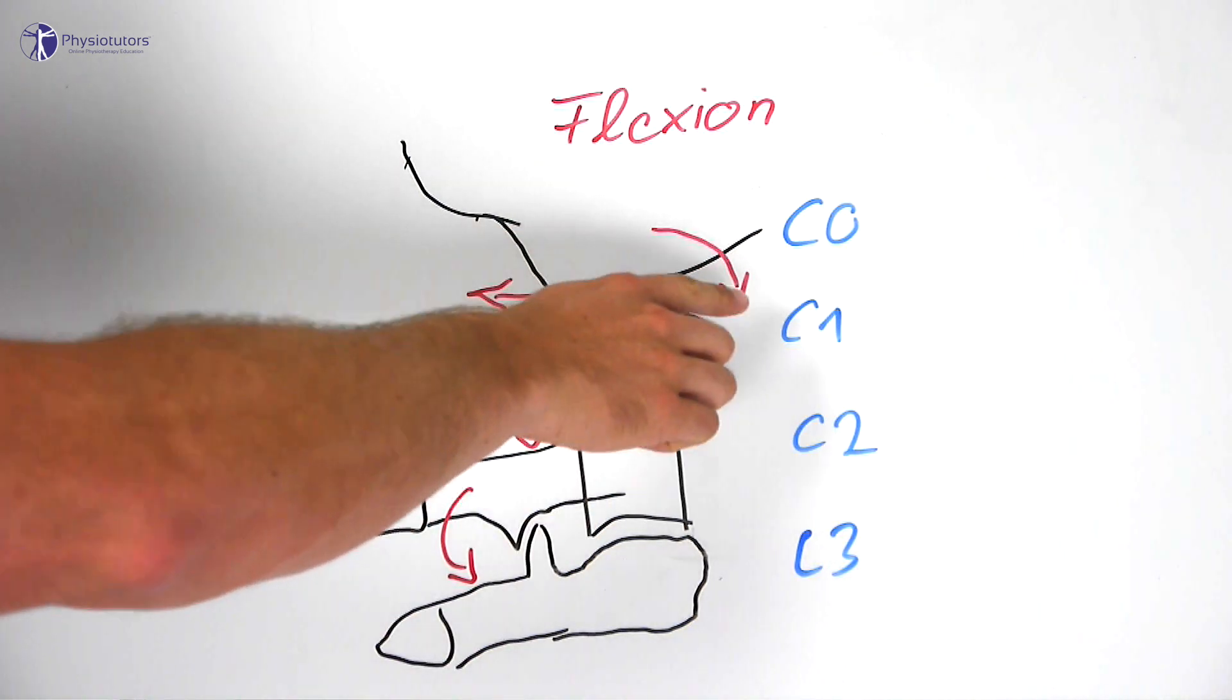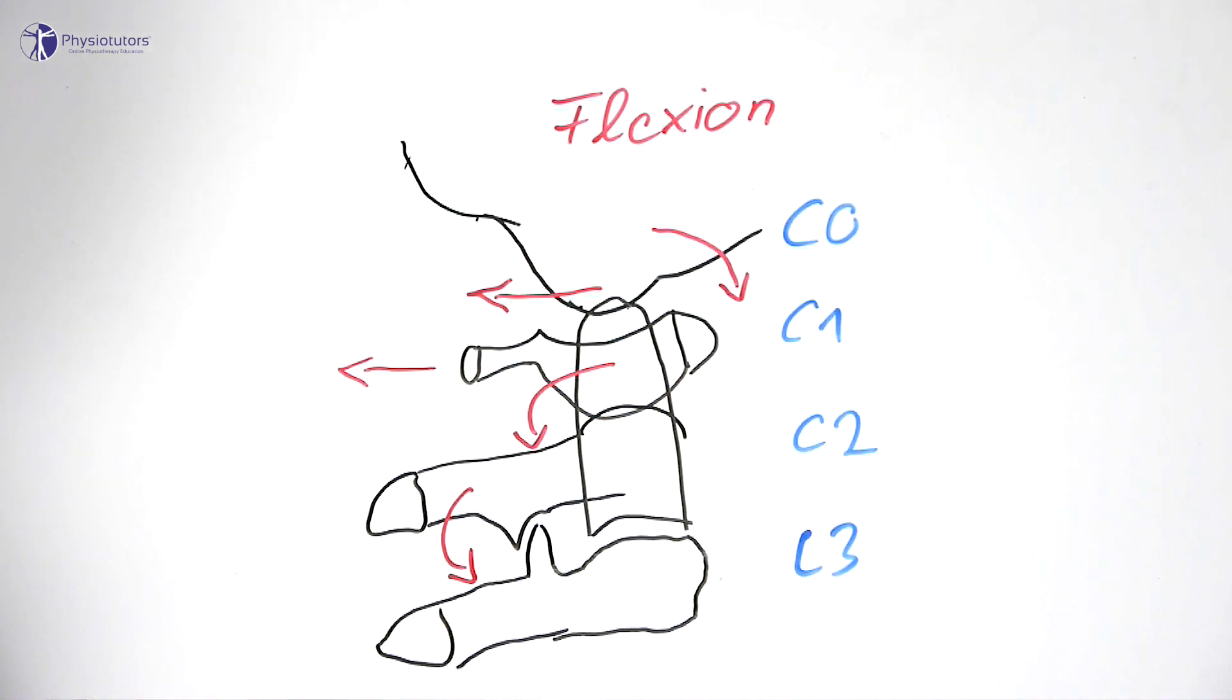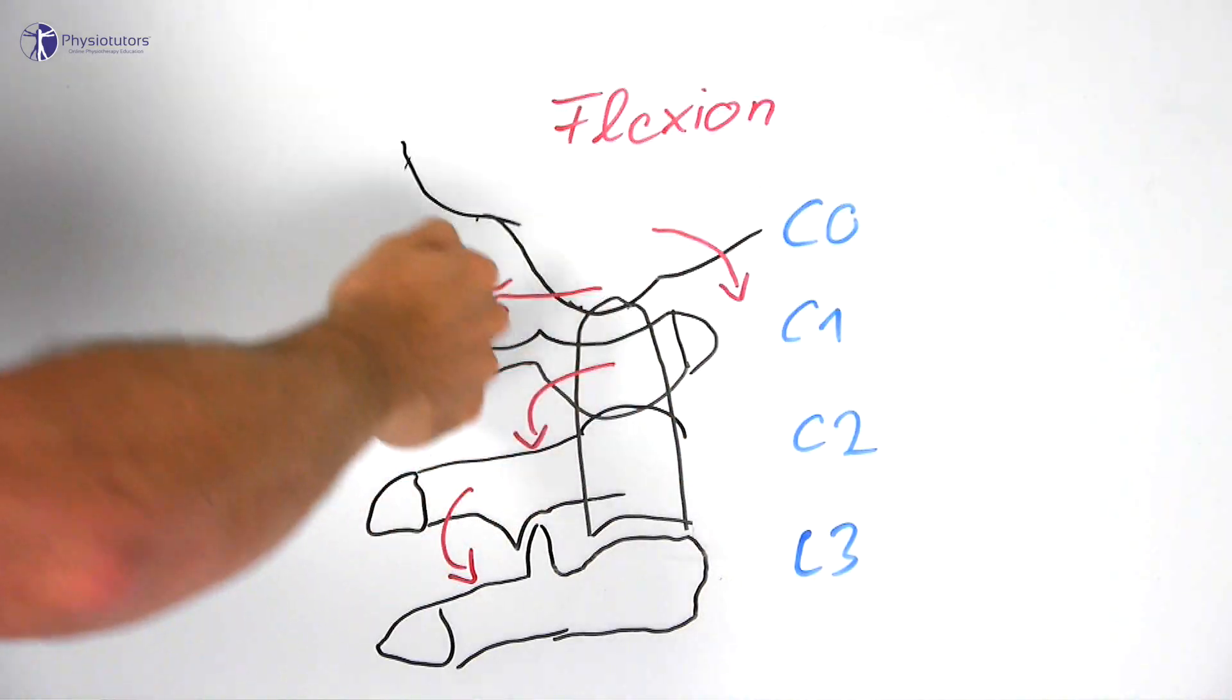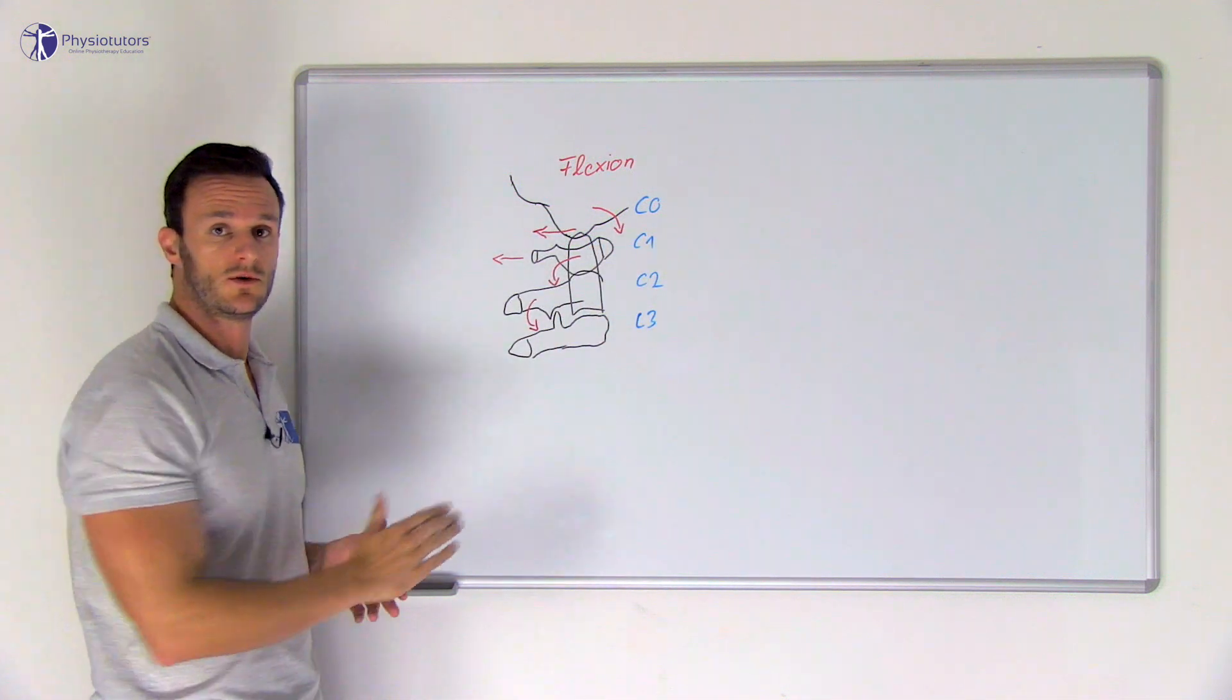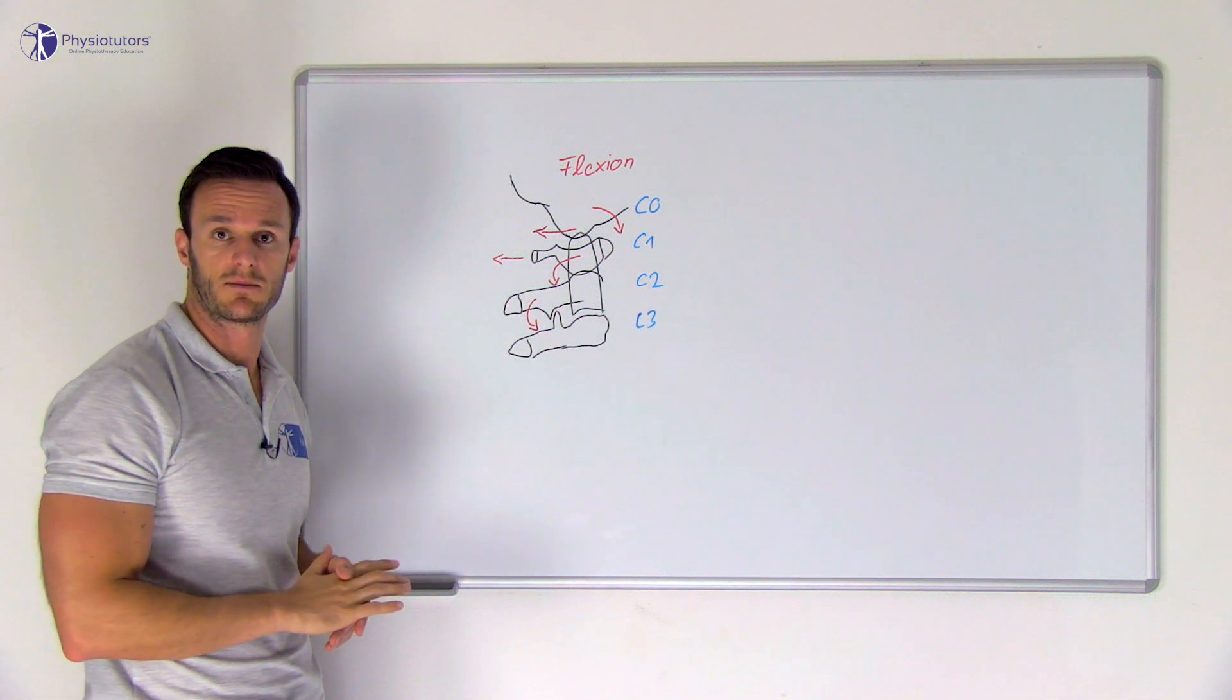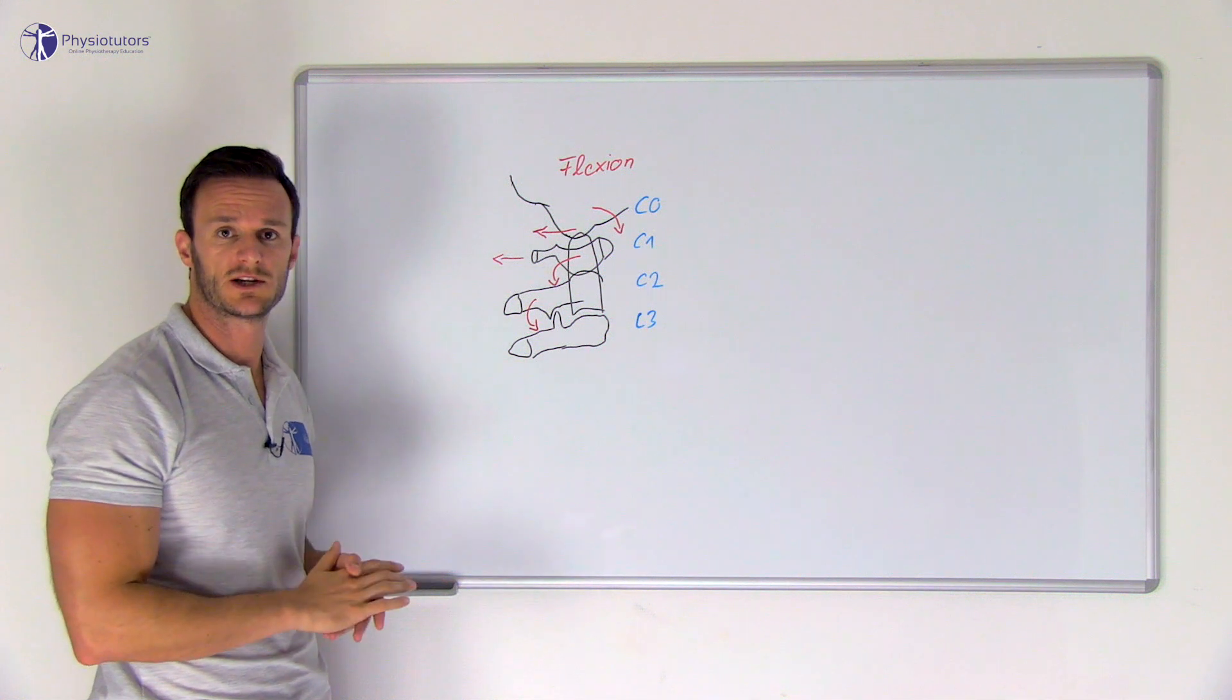By performing an upper cervical nod, the condyles of C0 roll forwards and slide backwards according to the Kaltenborn convex-concave rule, taking the very mobile atlas (C1) with them in posterior direction. When the anterior arch of the atlas impacts onto the dens, the dens of C2 is tilted backwards, and this backward tilt and translation can be excessive in case of a torn transverse ligament, possibly pinching the dura mater or the myelum that is running posterior to the dens.